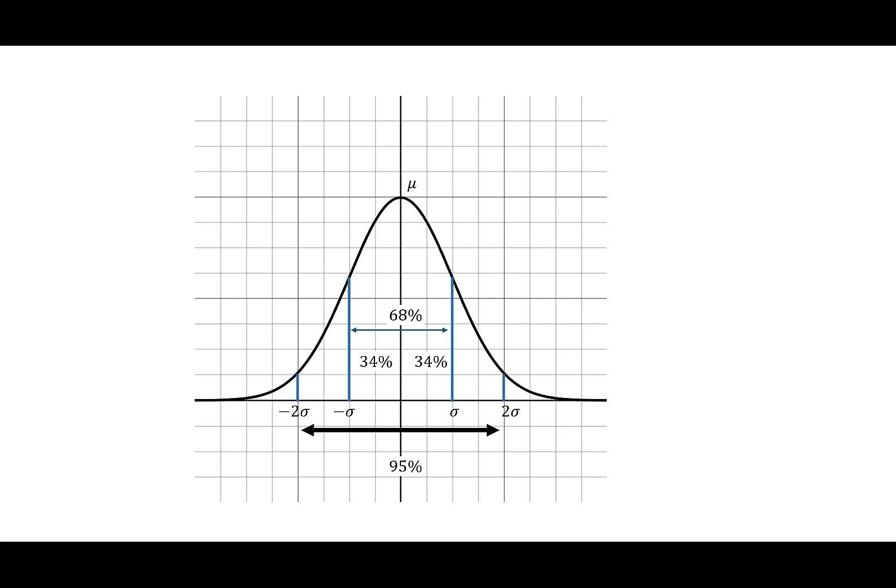When I look at two standard deviations, I'm supposed to have 95 percent of the data. Since I already have 68 percent of the distribution, I need to find what percent is added when I go from one standard deviation to two. When I subtract 68 percent from 95 percent, I get 27 percent.